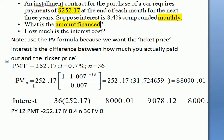Filling in the numbers, we have 252.17 as the PMT, and then [1 minus 1.007^(-36)] divided by 0.007.